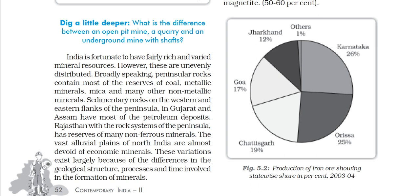As you can see, Chhattisgarh has 26% of iron ore production, Odisha 25%, Karnataka 19%, Goa 17%, Jharkhand 12%, and the remaining percentage belongs to other states.